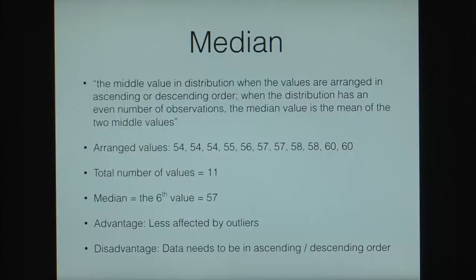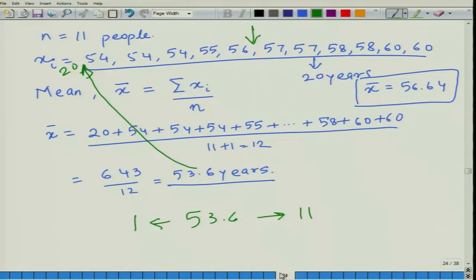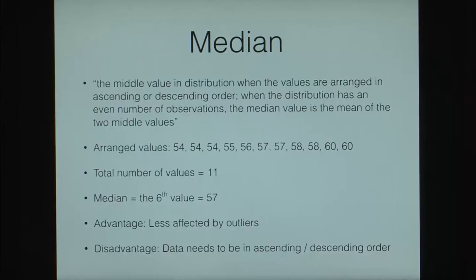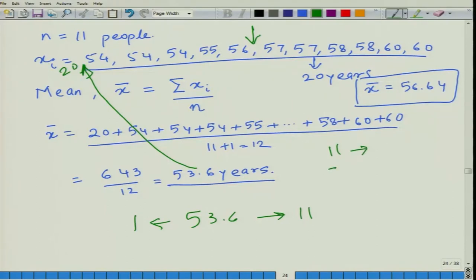This is why we need another measure of central tendency called the median. The median is defined as the middle value in the distribution when values are arranged in ascending or descending order. When the distribution has an even number of observations, the median is the mean of the two middle values. In the case of our 11 people — an odd number — we can have 5 values to the left, 5 to the right, and the sixth value would be the median.